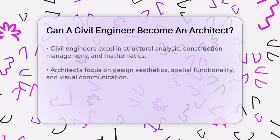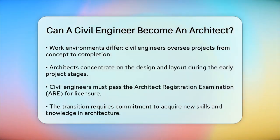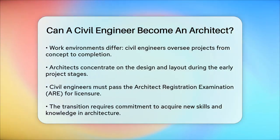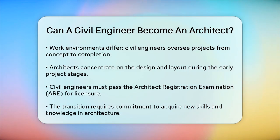For a civil engineer to become an architect, they would need to complete the necessary educational requirements and gain the specific skills and knowledge that architects possess. This includes passing the Architect Registration Examination to obtain an architectural license, which is a requirement to practice as an architect.